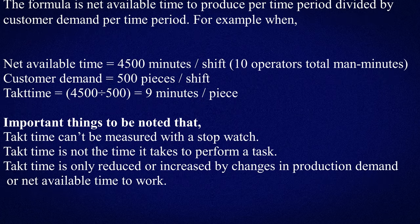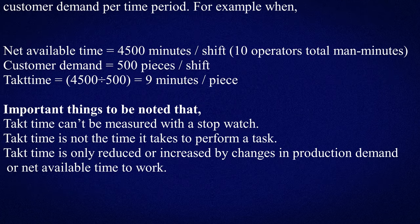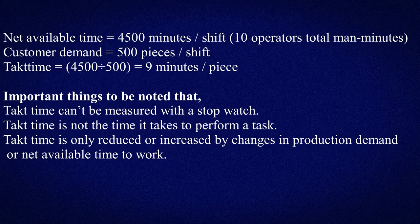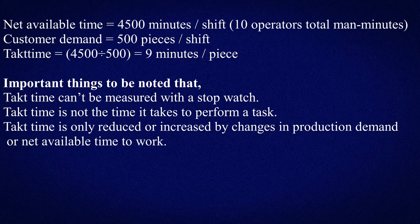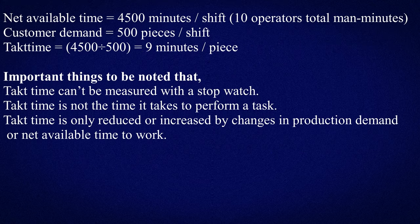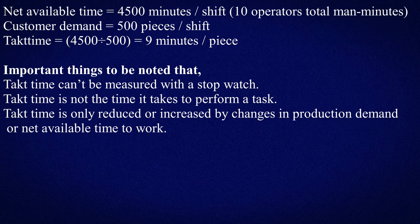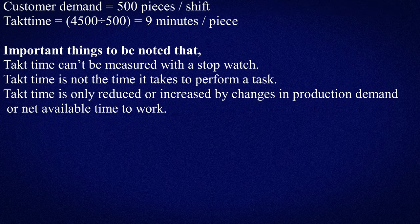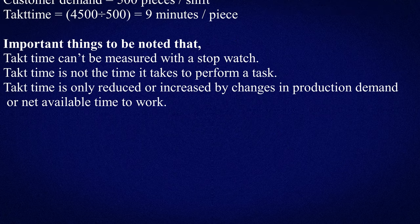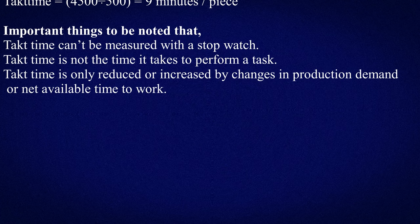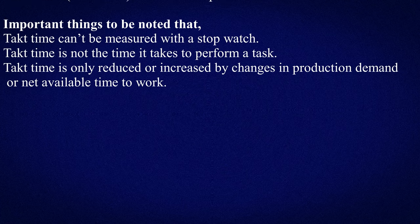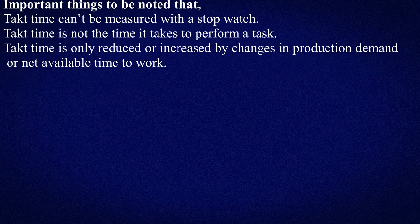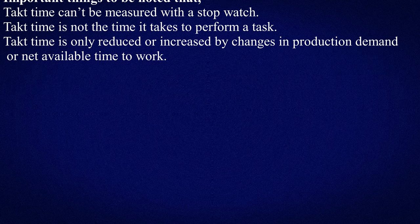...takt time equals 4500 divided by 500, which equals 9 minutes per piece. Important things to note: takt time cannot be measured with a stopwatch; it is not the time it takes to perform a task. Takt time is only reduced or increased by changes in production demand or net available time to work.